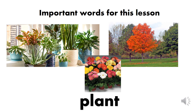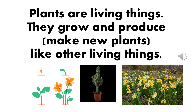The first word is plant. Now you say the word plant. There are many different kinds of plants around us. Some examples of plants are grass, trees, vines, cactus, and flowers. Plants are living things. They grow, which means they get bigger, and they produce, which means they make new plants.